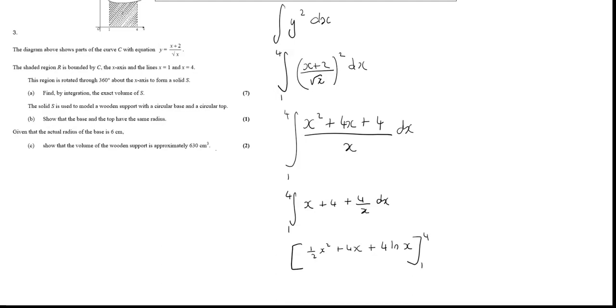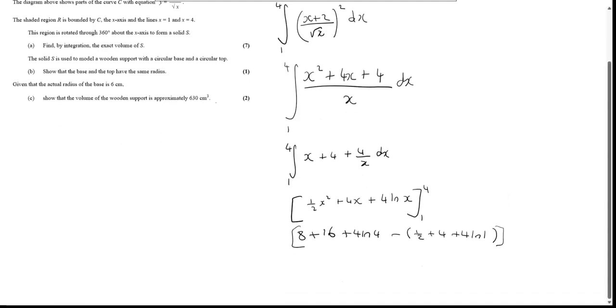I'm going to get 1 half x squared plus 4x plus 4 ln x between 4 and 1. So we're going to get, sub in 4, 4 squared 16 over 2, so 8 plus 16 plus 4 ln 4, minus 1 half plus 4 plus 4 ln 1. But we know ln 1 is 0, so that second bracket only gives us 1 half plus 4, which is 9 over 2.